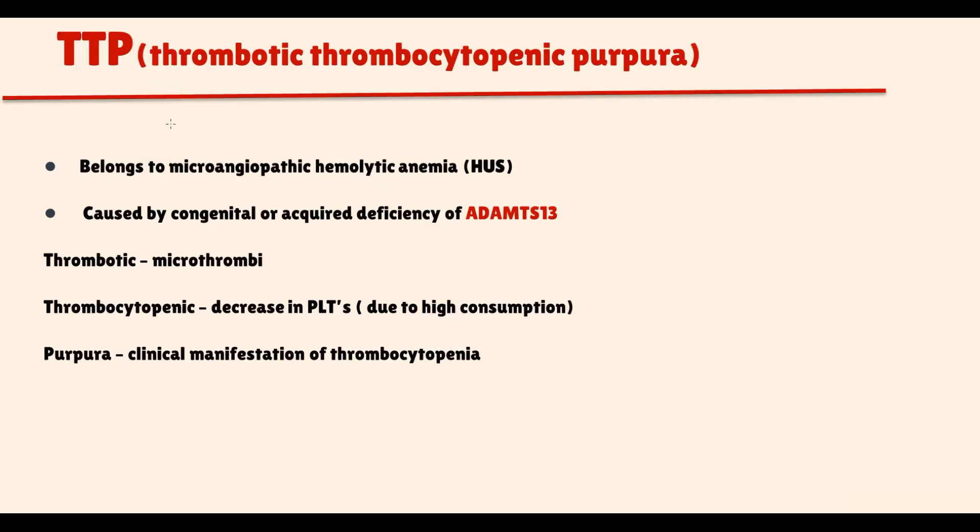Thrombotic thrombocytopenic purpura belongs to so-called microangiopathic hemolytic anemias. We have two of them, another one is hemolytic uremic syndrome. TTP results from either a congenital or acquired deficiency of the specific enzyme ADAMTS13, also known as von Willebrand factor cleaving protease.